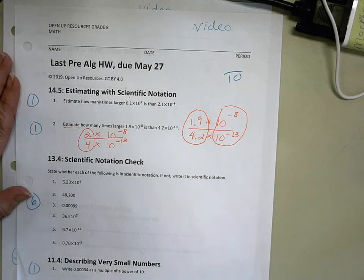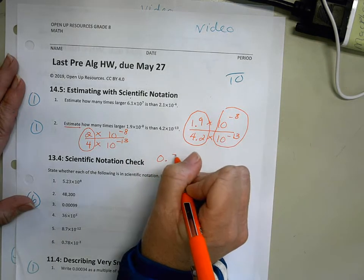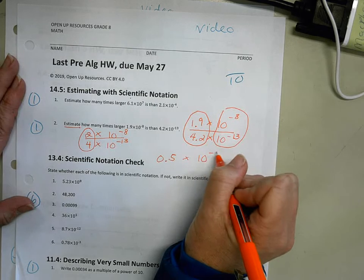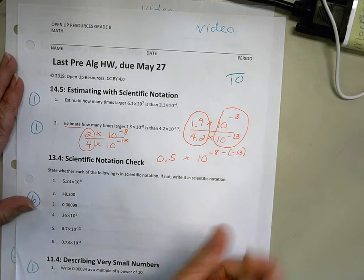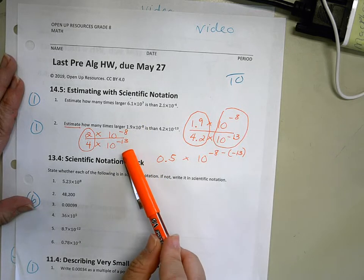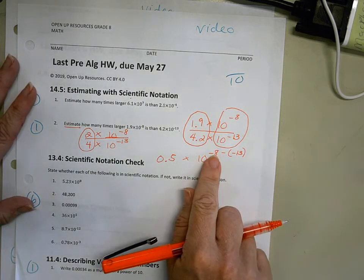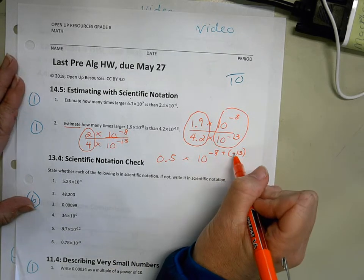All right, so 2 divided by 4 is one-half. As a decimal, that would be 0.5 times 10 to the negative 8 minus the negative 13 power. Because when we divide our powers of 10, we can just subtract our exponents. So negative 8 minus negative 13 is the same thing as negative 8 plus 13.